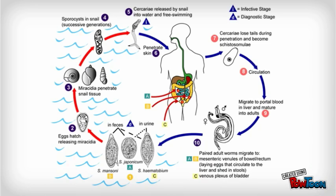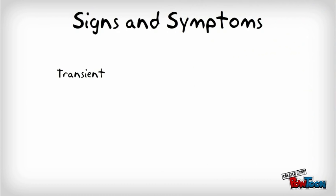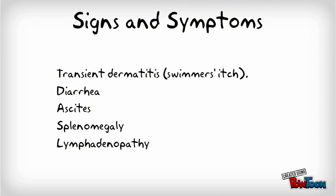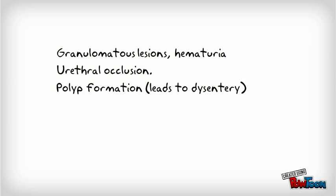Signs and symptoms include: transient dermatitis, also known as swimmer's itch; diarrhea; ascites; splenomegaly; lymphadenopathy; granulomatous lesions leading to hematuria; urethral occlusion; and polyp formation which can lead to dysentery.